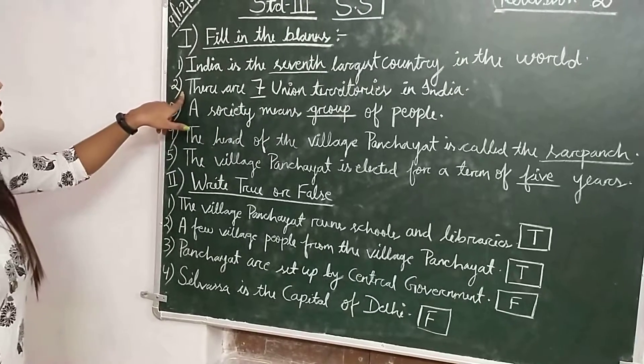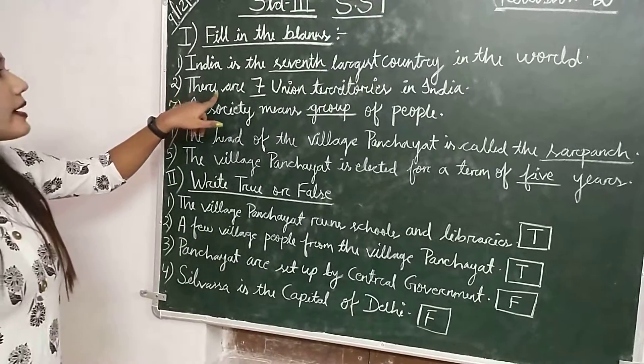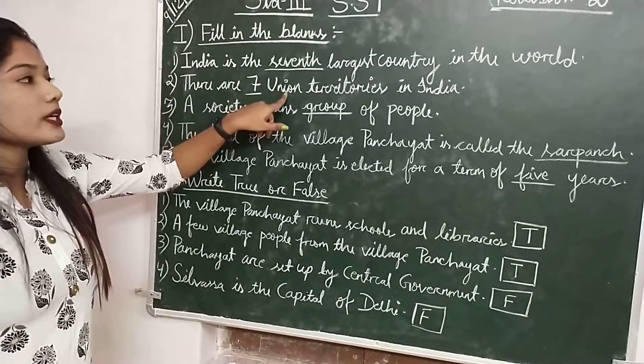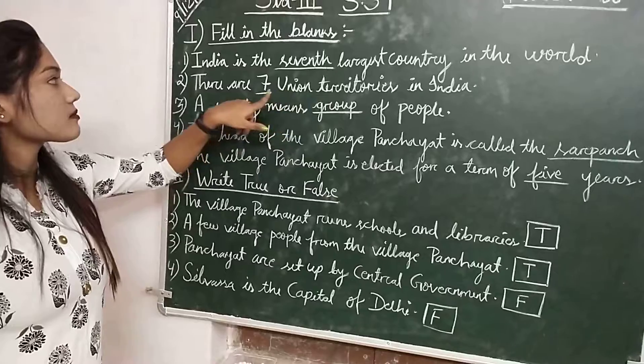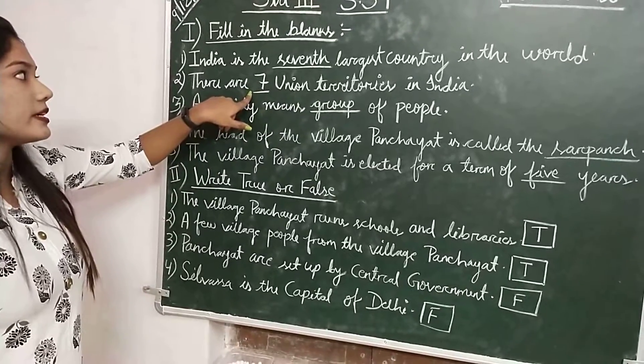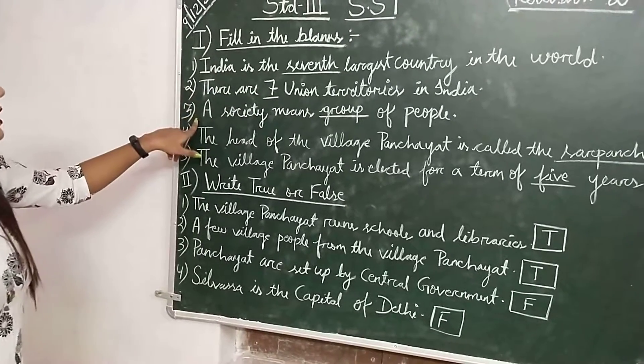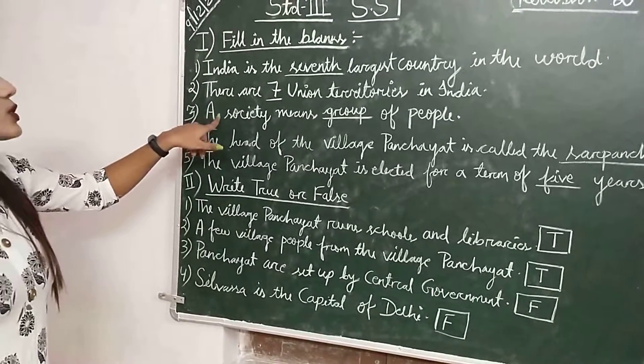Second number is: there are __ union territories in India. Answer: Seven.